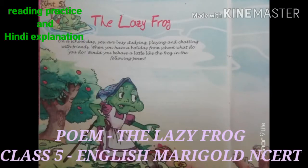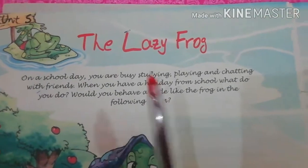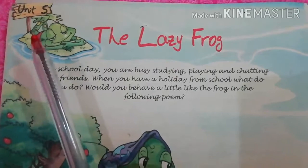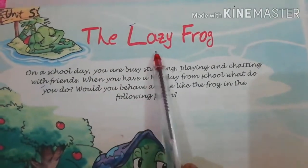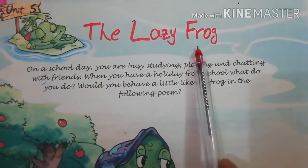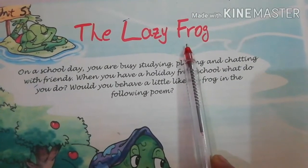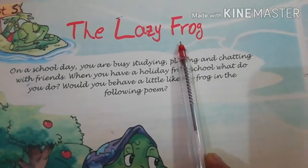Hello children, welcome to your English class. Today we will do poem number five from unit five — 'The Lazy Frog'. So let's do reading, and then I will explain it to you in Hindi. This is unit five and the name of the poem is 'The Lazy Frog'. The poem is about a lazy frog that does not do anything all day and wastes his time.